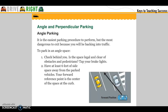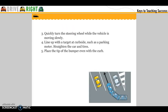Number one: check behind you — is the space legal and clear of obstacles and pedestrians? Tap your brake lights. Two: have at least six feet of side space away from the parking vehicle. Your vehicle reference point is the center of the car aligned with the space at the curb. Quickly turn the steering wheel while the vehicle is moving slowly. Line up with a target at curbside, such as parking meters. Straighten the car and tires, and place the tip of the bumper even with the curb.